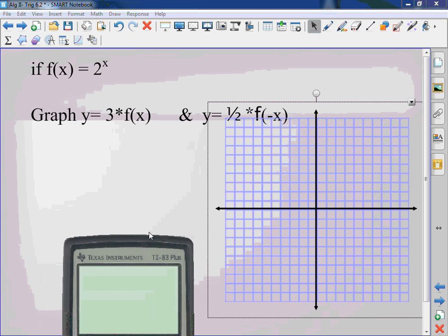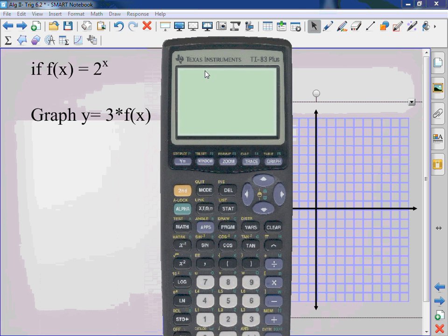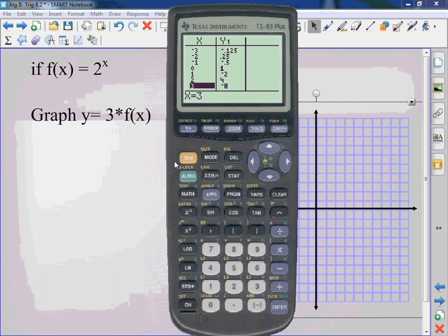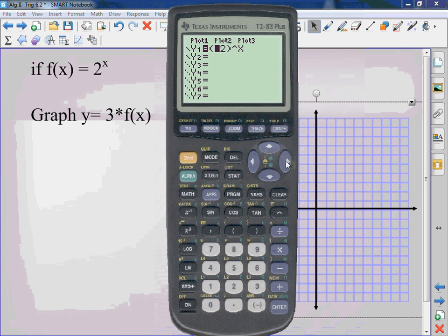All right, for the first graph, here's the original one. The original one was 2 to the x. There's the graph. Now, if I take this and do 3 times 2 to the x, what happens? What happened to your numbers? It tripled the numbers.